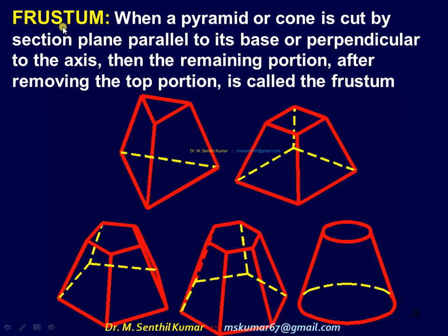Instead of a full solid, if it is cut, then there are two types. One is called the frustum, the other one is truncated. When the pyramid or cone is cut by a cutting plane, and if the cutting plane is parallel to the base or perpendicular to the axis, then the portion remaining after removing the top portion is called frustum — frustum of triangular pyramid, frustum of square pyramid, frustum of pentagonal pyramid, frustum of hexagonal pyramid, frustum of a cone.